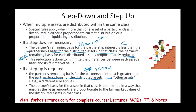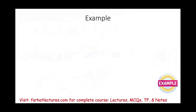The partner's basis for the asset in that class is determined in a way that ensures the basis amounts are proportionate to the fair market value. So we're going to use the proportionate fair market value of the distributed asset in that class. Let's take a look at an example — we'll go back to John's example.